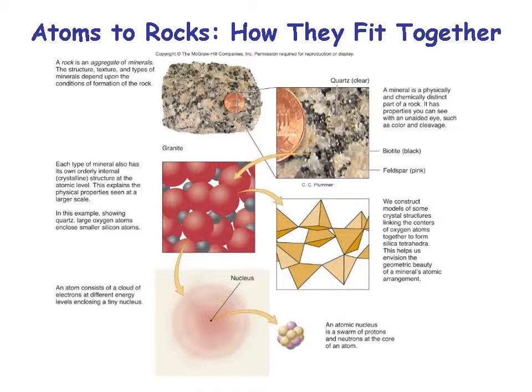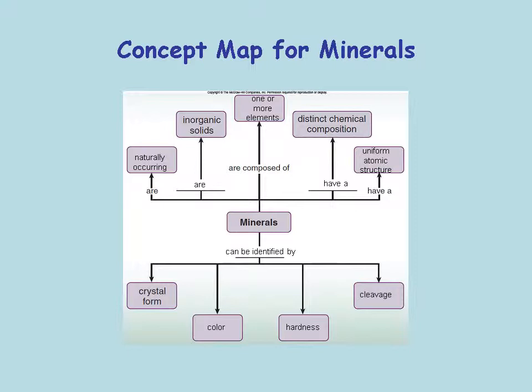In summary — atoms to rocks: a rock is an aggregate of minerals. A mineral is made up of multiple elements, most of which in rocks are silicon and oxygen. When they combine, we call them silica. Silica combines in little tetrahedrons, and depending on the shape of those tetrahedrons will determine what type of mineral group or rock we see — and also what type of cleavage planes we get. Minerals are naturally occurring, inorganic solids with a distinct chemical composition and uniform atomic structure, and can be identified by crystal form, color, hardness, and cleavage.